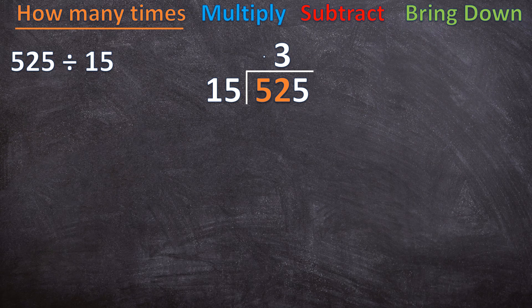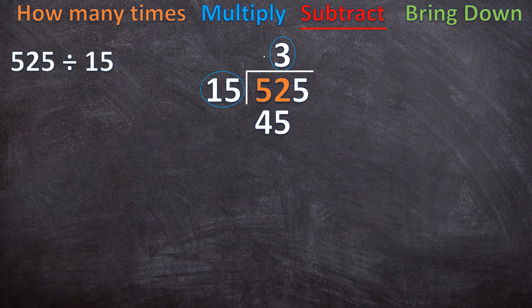Now the next step is 'multiply'. You take the answer you got — the 3 — and multiply it by your divisor, writing the result directly underneath the 52. So 3 times 15 is 45. Now the next step is 'subtract': 52 minus 45 is 7. And now the last step — you bring the next digit down. The next digit is 5, so you just bring it down.